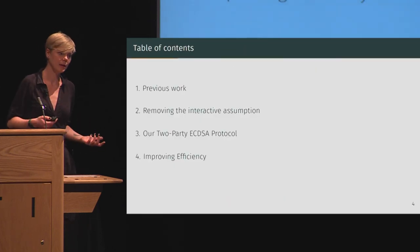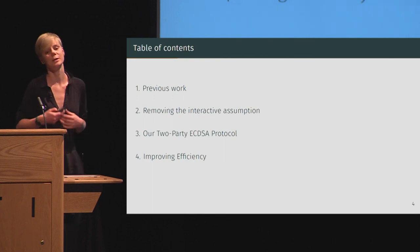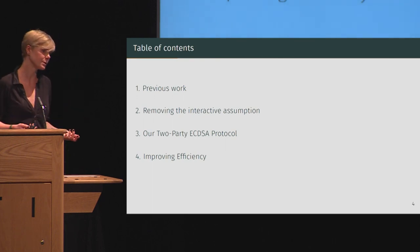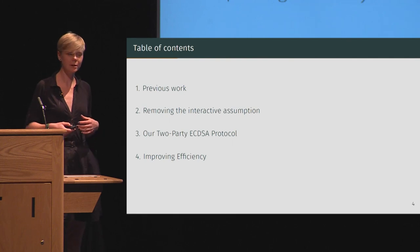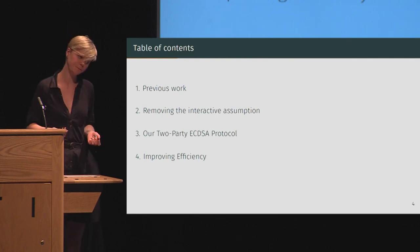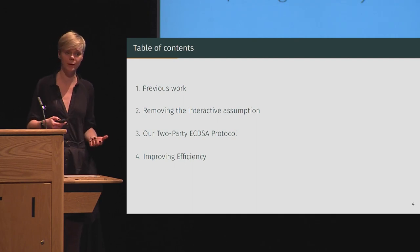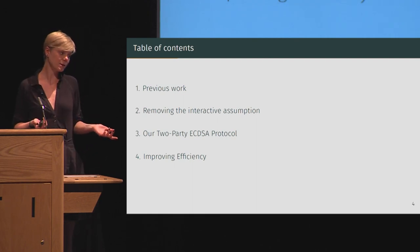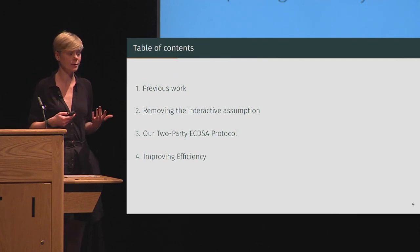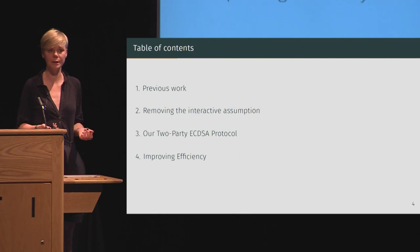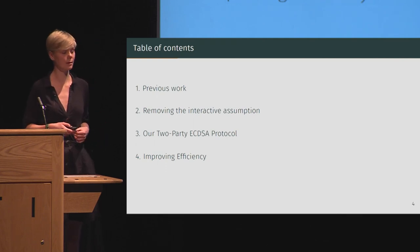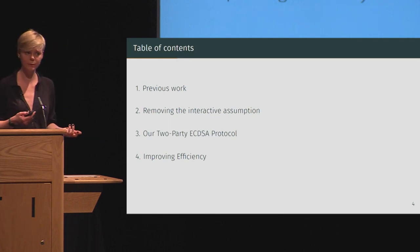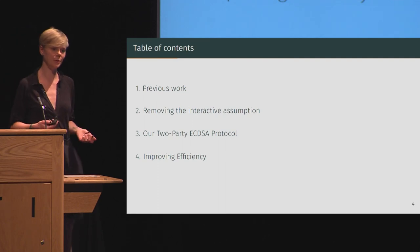Before I go any further, let me give you an idea of where we're heading. I'll first talk about previous work in this field and in particular that which we build upon, and outline its drawbacks — in particular, the reliance on a non-standard interactive assumption. I'll explain how we remove this assumption by using hash proof systems, provide the generic construction and improve its security, and finally explain how we instantiate this from class groups, which allows us to remove range proofs and significantly improve communication cost.